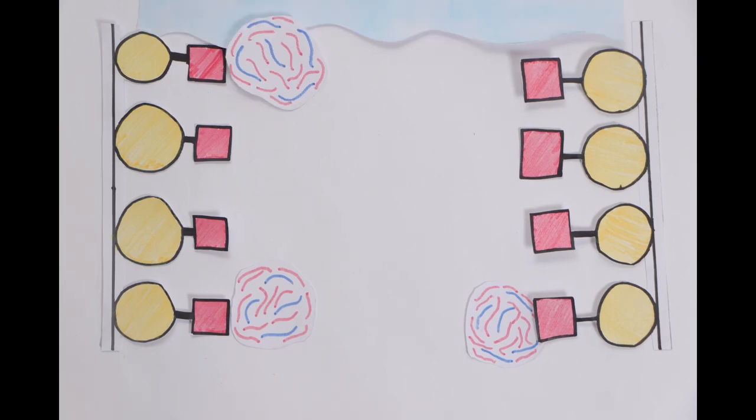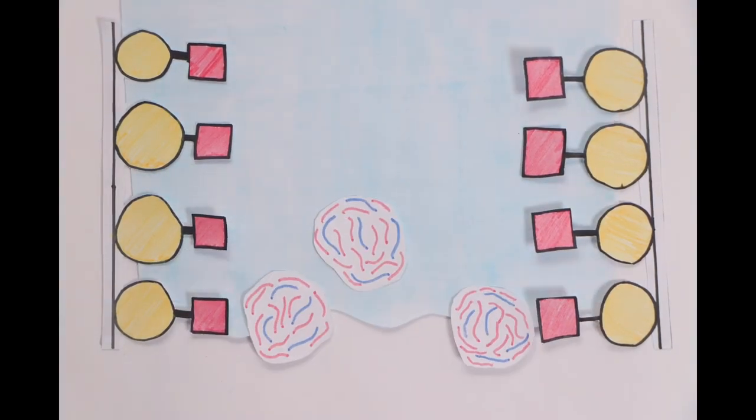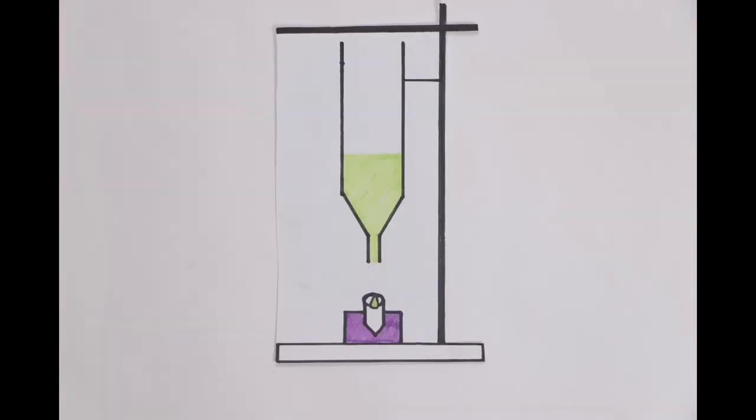A low salt elution buffer is added to the column, causing the bound proteins to detach and be eluted. The run-through is collected in the collection tube, and this is the protein of interest.